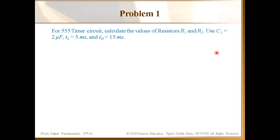Let's go to an example and see how we actually can set up the resistors and configure this circuit. We have a 555 timer circuit but we don't know R1 and R2. We are given: C1 = 2 µF, discharging time TL = 5 ms, and charging time TH = 15 ms. We need to find R1 and R2.